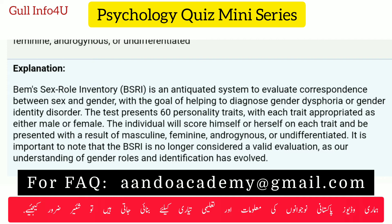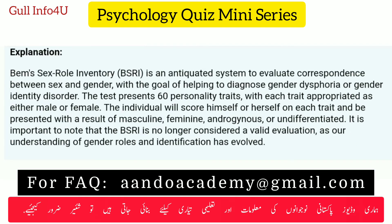Why this answer is correct: the Bem Sex Role Inventory, or BSRI, is an antiquated system used to evaluate correspondence between sex and gender, with the goal of helping to diagnose gender dysphoria or gender identity disorder. The test presents 60 personality traits, each categorized as either male or female. The individual scores himself or herself on each trait and is presented with a result of masculine, feminine, androgynous, or undifferentiated.